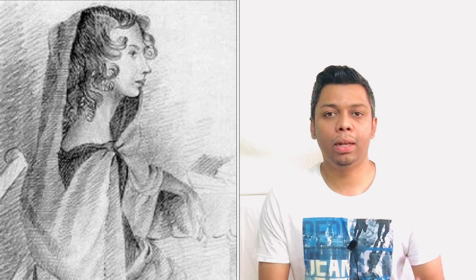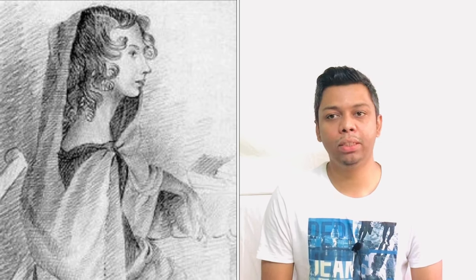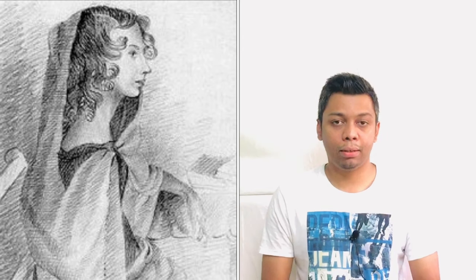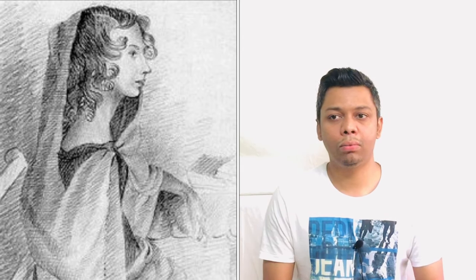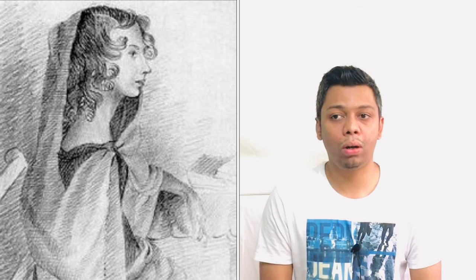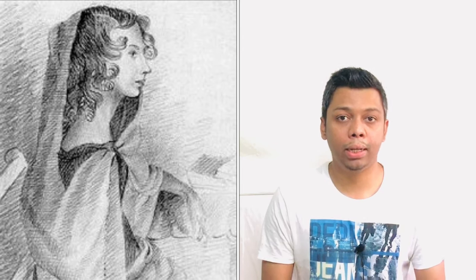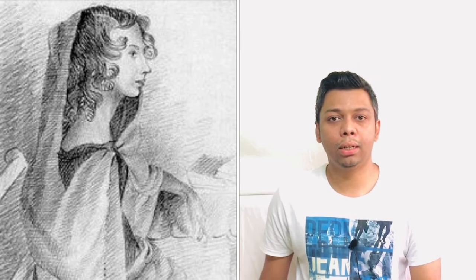The first writer I'm going to talk about is Anne Brontë. The three Brontë sisters — Charlotte, Emily, and Anne — all used pen names. Anne Brontë used the pen name Acton Bell. She was born on 17th January 1820 and passed away on 28th May 1849. She was a famous poet and novelist among the Brontë sisters, and her famous novel is Agnes Grey, published in 1847, as well as The Tenant of Wildfell Hall.